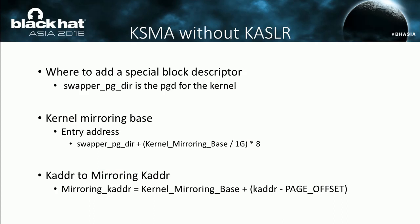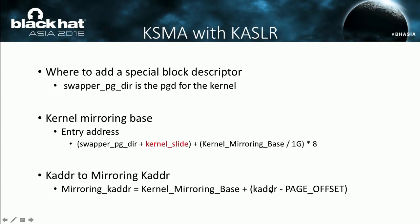To add a special block descriptor to the kernel page table, you need to know the start virtual address of the level 1 table. In the Linux kernel, swapper_pg_dir is the kernel page global directory. For the kernel mirroring base, the virtual address of the table entry can be calculated by a simple expression. With this formula, the mirroring kernel virtual address can be easily converted. With KASLR enabled, the only difference is that it requires the kernel slide to calculate the real virtual address of swapper_pg_dir.